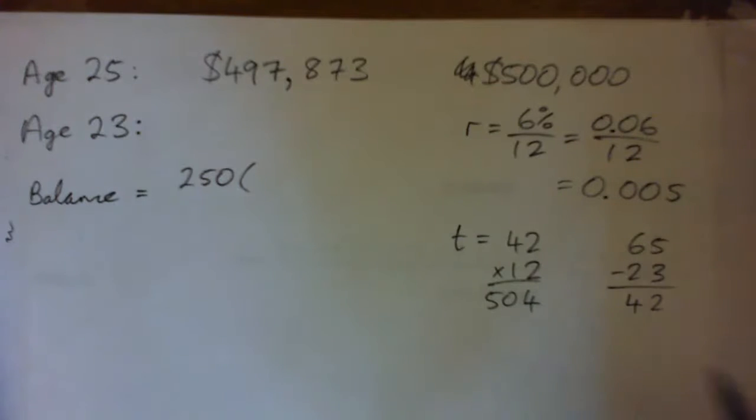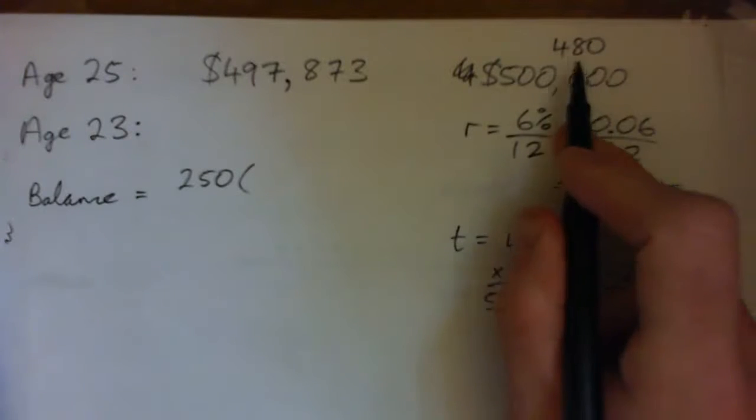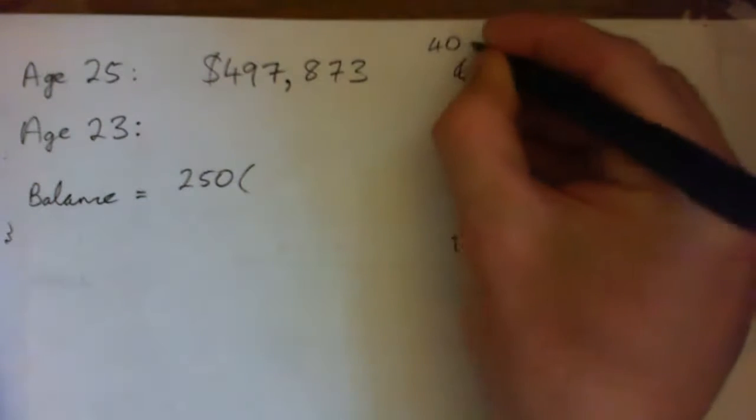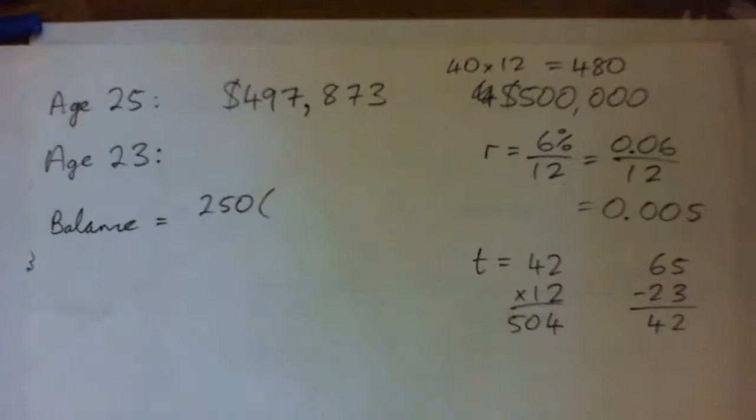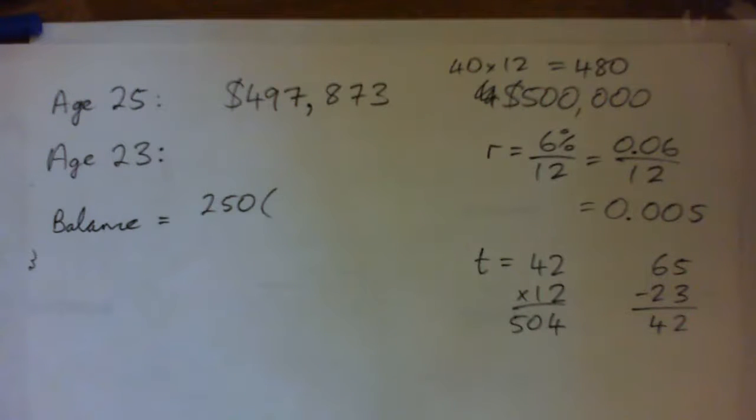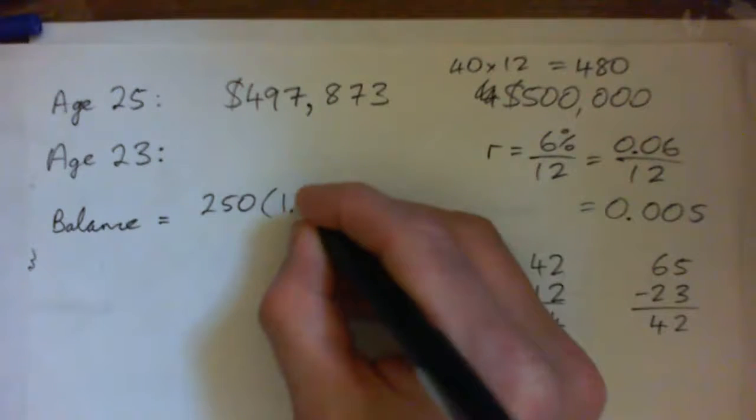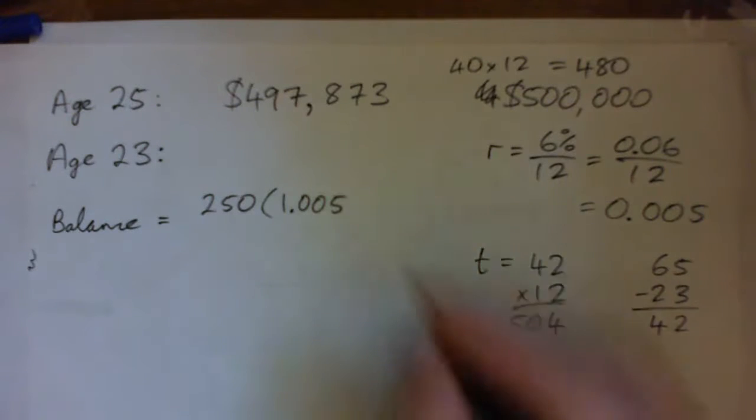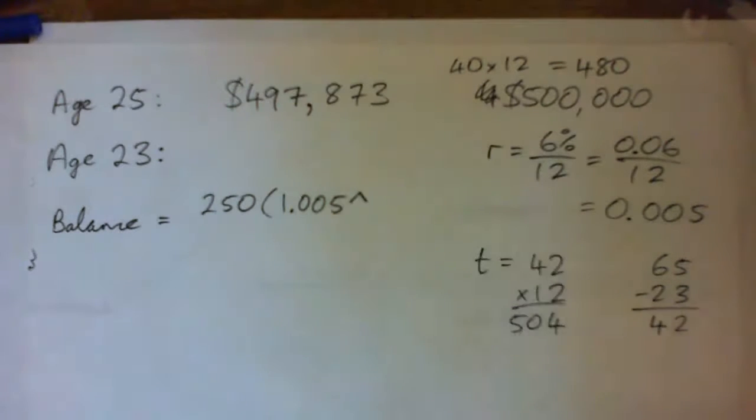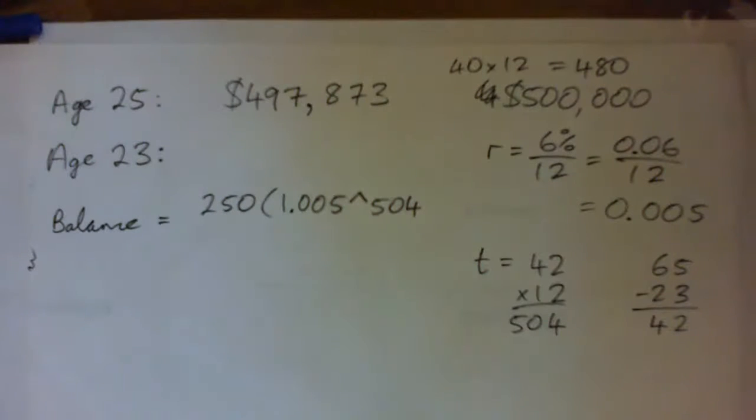Whereas previously it was like in the previous question, it was like 480 months because you were working for 40 years. So previously was 40 times 12. So that's our R, so it's 1 plus R to the power of T. Now, this is a nice interest rate. I'm just going to write my 1 plus R like this, 1.005, so to the power of T. I'm going to do the calculator power to the power of 504, right?